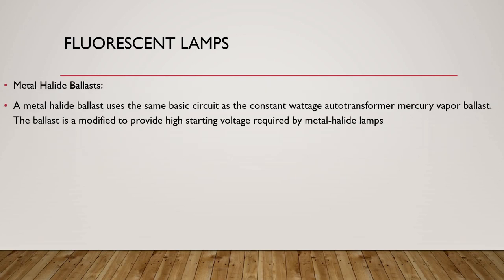Metal halide ballast: a metal halide ballast uses the same basic circuit as the constant wattage transformer mercury vapor ballast. The ballast is modified to provide the high starting voltage required by metal halide lamps.